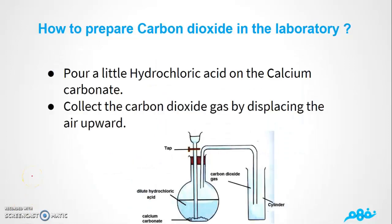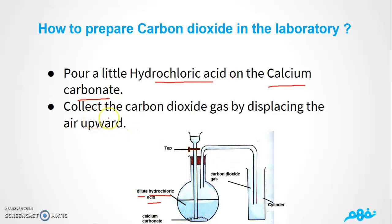First of all, we're going to pour a little of dilute hydrochloric acid and add something called calcium carbonate. After a while, we can see that we're going to collect the carbon dioxide gas by displacing the air upward. So after we add the dilute hydrochloric acid to the calcium carbonate, carbon dioxide will be collected by displacing the air upward.